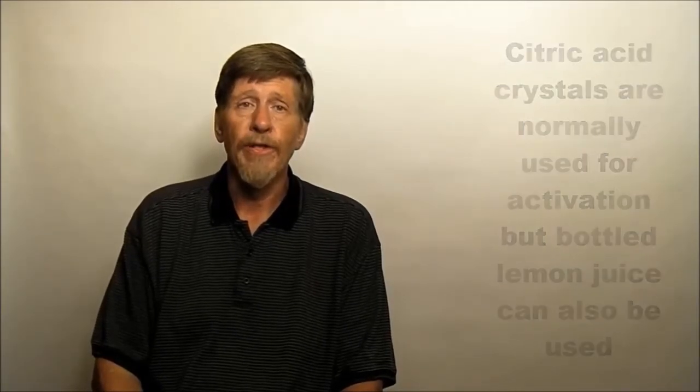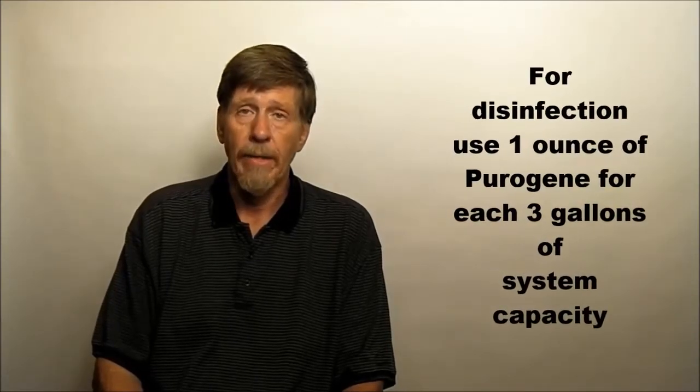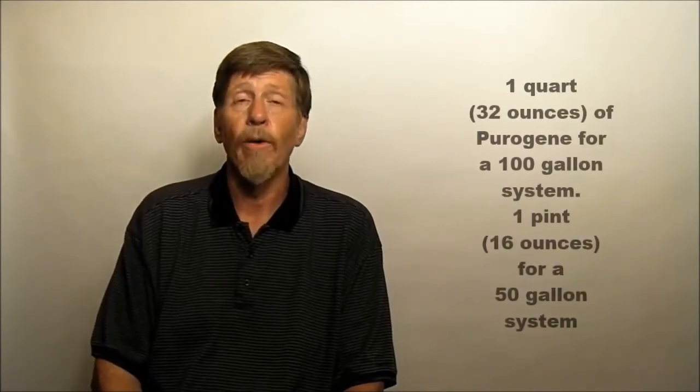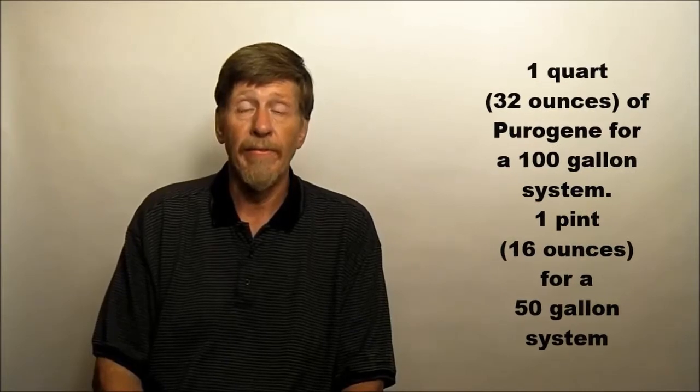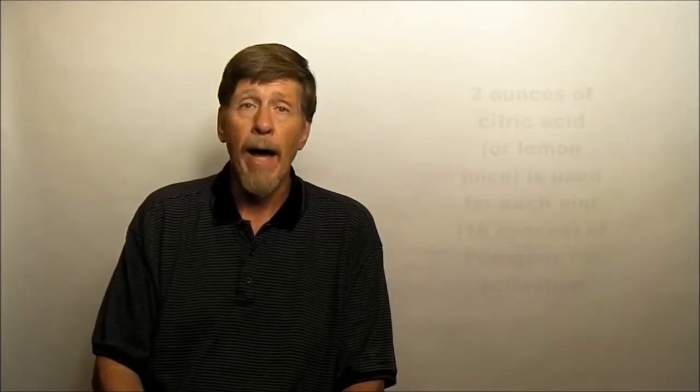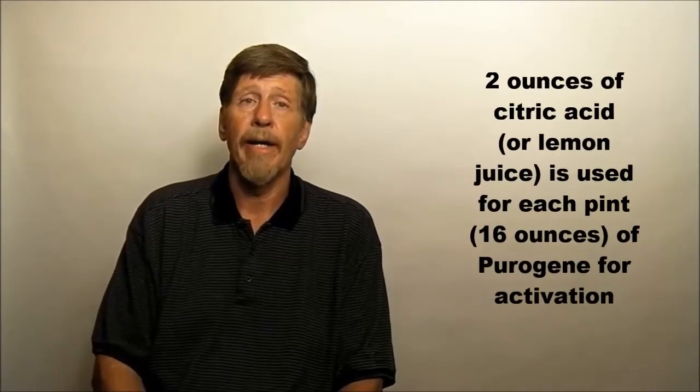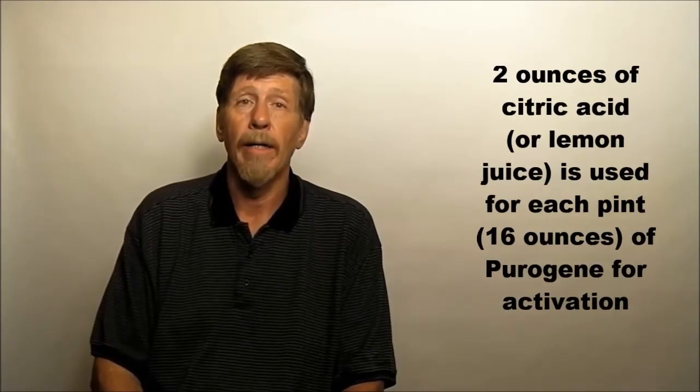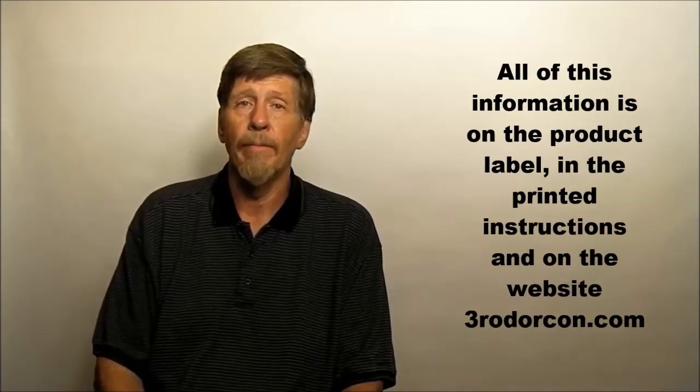The amount of Purigene used for the system disinfection is 1 ounce per 3 gallons of tank capacity. This works out to 1 quart or 32 ounces of Purigene for a 100-gallon system or 1 pint or 16 ounces for a 50-gallon system. For each pint or 16 ounces of Purigene, you will need 2 ounces of citric acid or the same amount of bottled lemon juice to activate it. Don't worry if you can't remember these amounts. This information is on the product label, in the printed instructions, and available on our website.